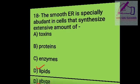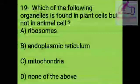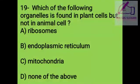Question 19: Which of the following organelles is found in plant cells but not in animal cells? A. Ribosome, B. Endoplasmic reticulum, C. Mitochondria, D. None of the above. The right answer is D, none of the above.